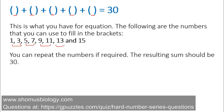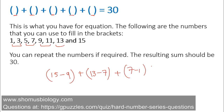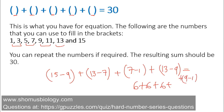All the given numbers can be combined by addition or subtraction to construct the values needed. For example: 15 minus 9, or 11 minus something, or 5 plus 7. One valid way to construct the equation is: (15−9) + (13−7) + (7−1) + (13−9) + (9−1). That gives: 6 + 6 + 6 + 4 + 8 = 30. The question is how to find these combinations — and you do it by working backwards from 30.